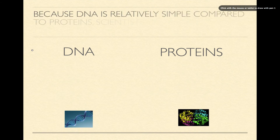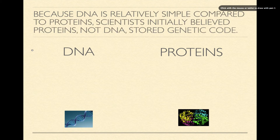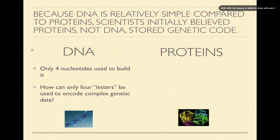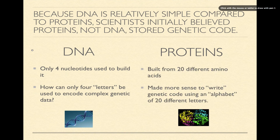Because DNA is a relatively simple molecule compared to proteins, scientists initially believed that proteins — not DNA — stored the genetic code. The nucleus is filled with basically two chemicals: DNA and protein. When scientists figured out that the nucleus is critical for cell division, they hypothesized that something in the nucleus stores the information for replication. DNA didn't seem like a good candidate because only four nucleotides build it — scientists wondered how just four letters could encode complex genetic data. Proteins, built from 20 different amino acids, seemed far more capable of encoding complex information.